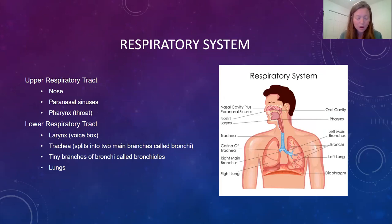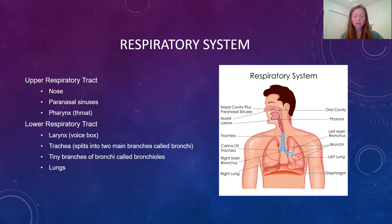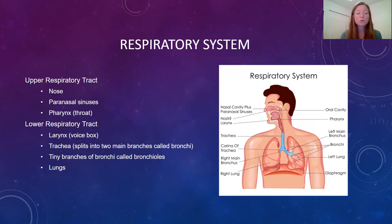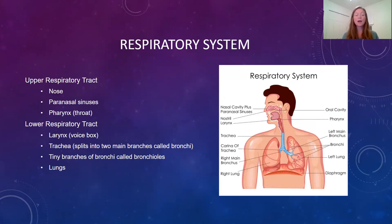Our respiratory system is there to provide oxygen to all cells of the body and to remove carbon dioxide. Respiration is the process of taking in that oxygen and giving off that carbon dioxide. The respiratory system is made up of the trachea, bronchi, bronchioles, nasal cavity, oral cavity, and lungs. They help maintain the balance of oxygen and carbon dioxide, as well as regulate the pH of the blood.